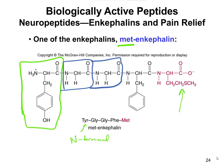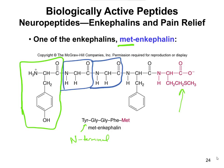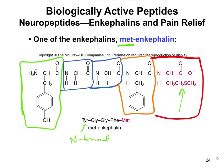After the two glycines, you have your phenylalanine here. And then the methionine would be the one in red over here at the end. So those are your five individual amino acids that make up one of these enkephalins.